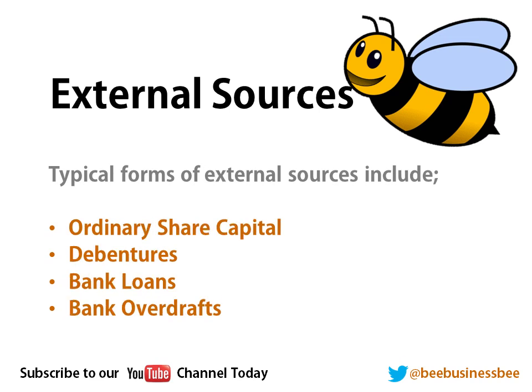External sources of finance typically include share capital — selling your ordinary shares to shareholders. Bank loans — fairly straightforward, you go to the bank and borrow money, which is typically a long-term solution. An overdraft, which is a short-term solution to cover short-term debts. And then there's a debenture, which is a long-term loan made at a fixed percentage rate of interest that you must repay by a certain date. It's a little different to a bank loan where the interest rate may fluctuate — with a debenture, the rate is fixed.